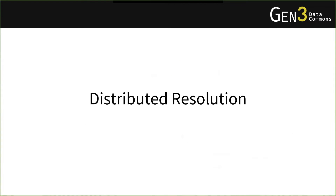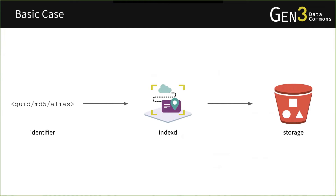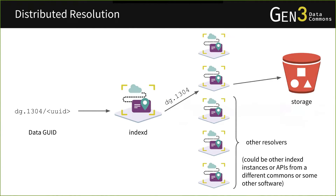IndexD also supports distributed resolution. In addition to looking up files by GUID, hash, or alias, IndexD supports indexing files over an entire network of other resolvers. These resolvers could be other IndexD instances or a completely different API on other software that IndexD has been designed to interoperate with. Given a data GUID containing an identifier for the next resolver, IndexD passes it along to that resolver, which knows the actual storage location of the file.